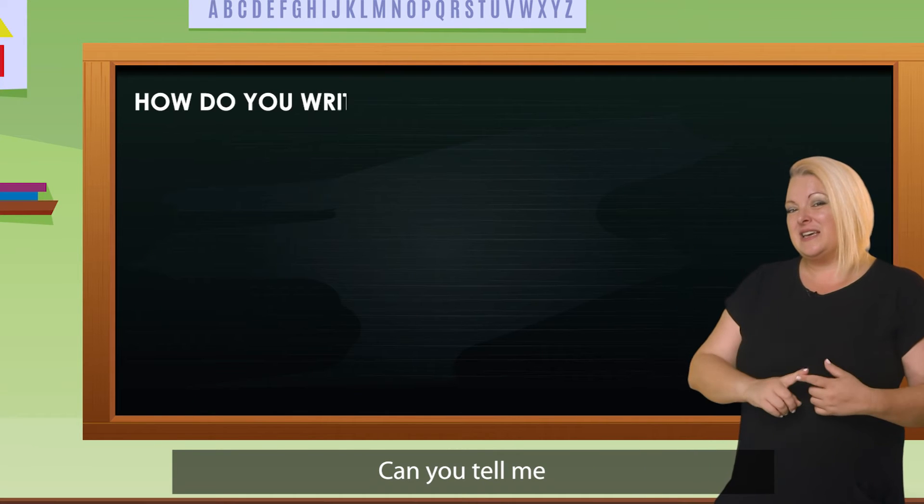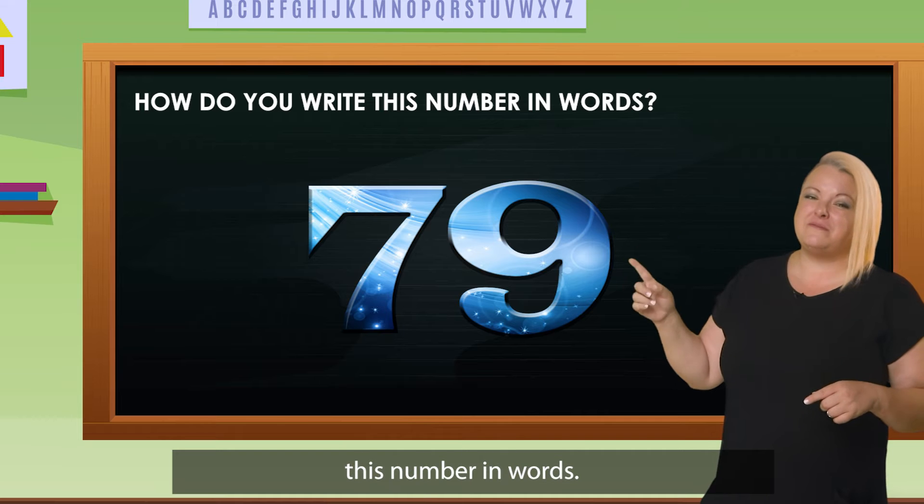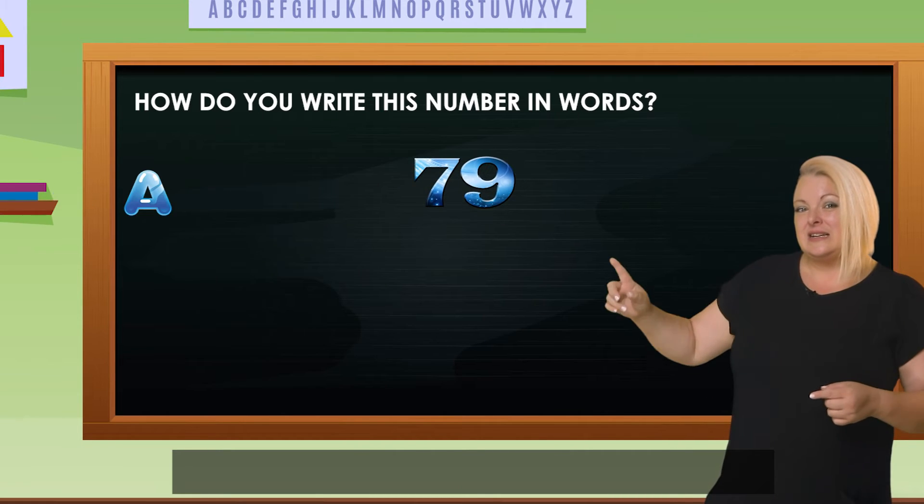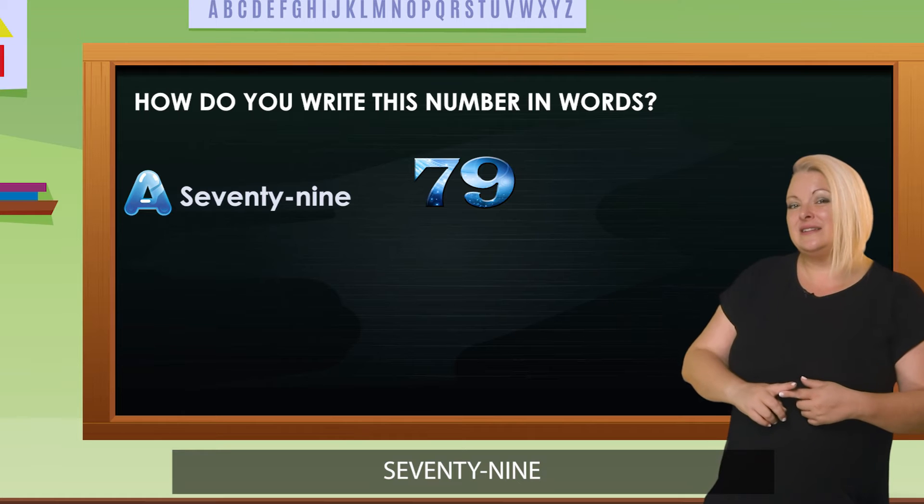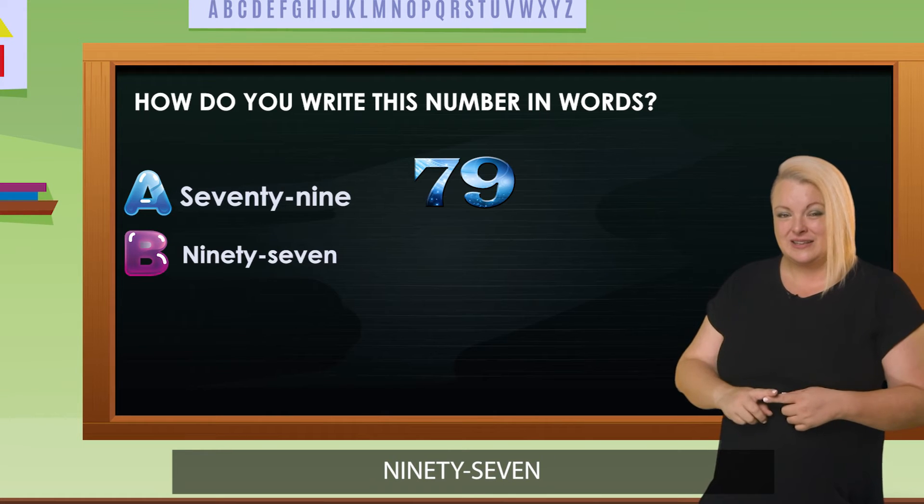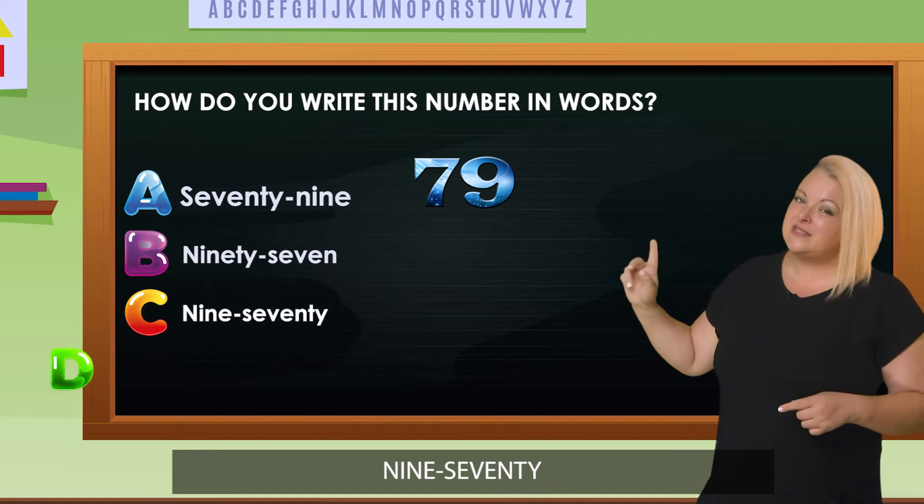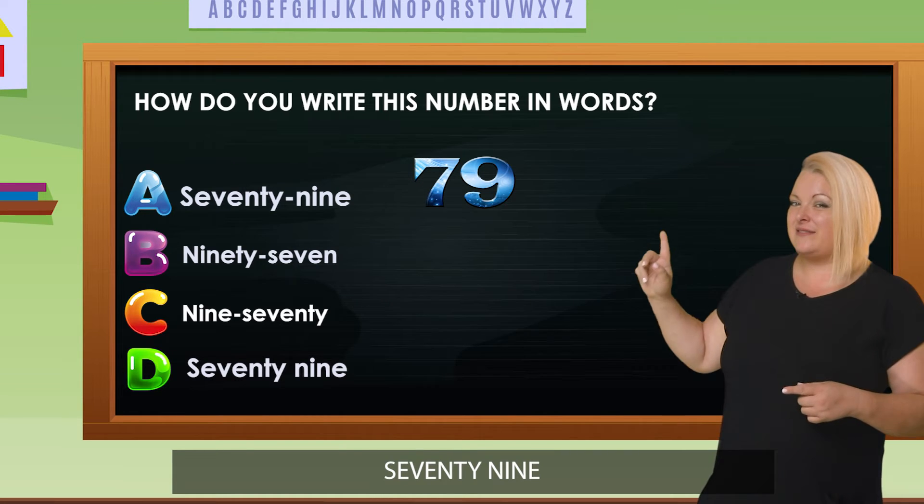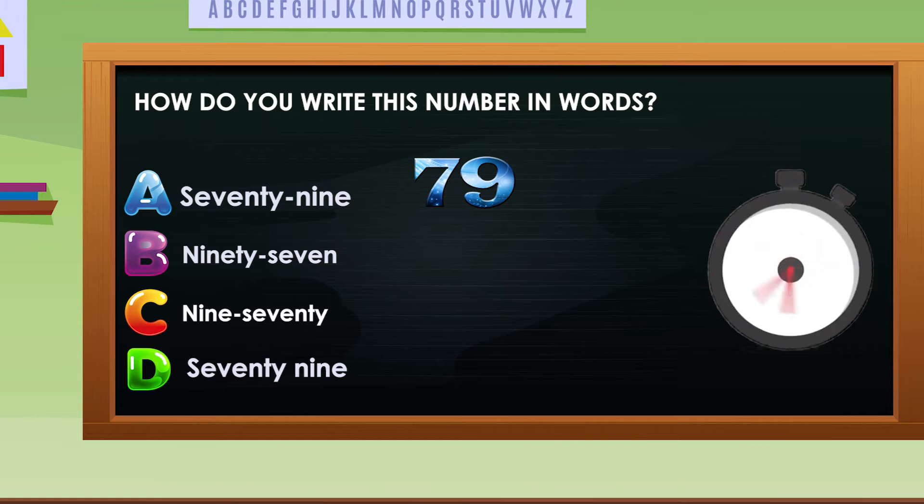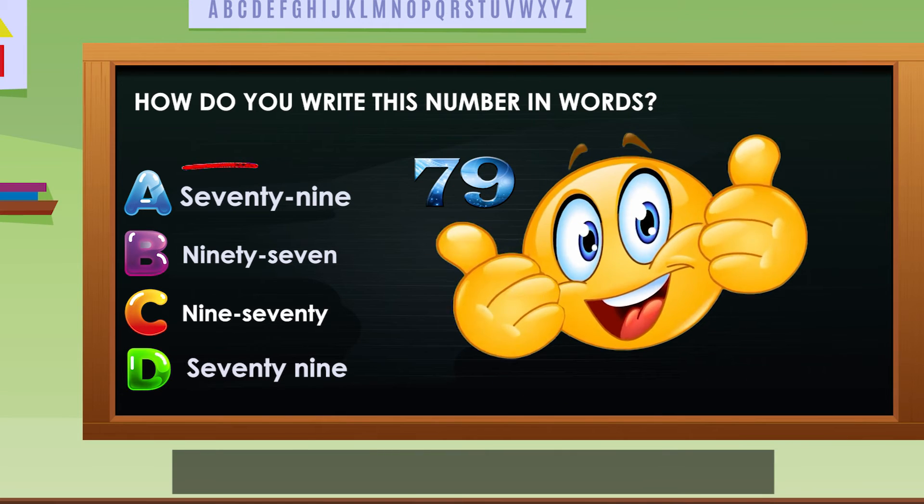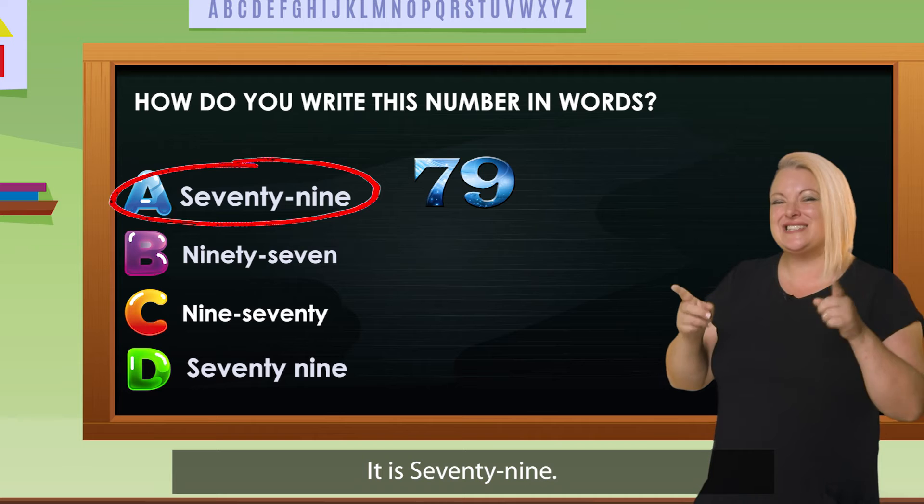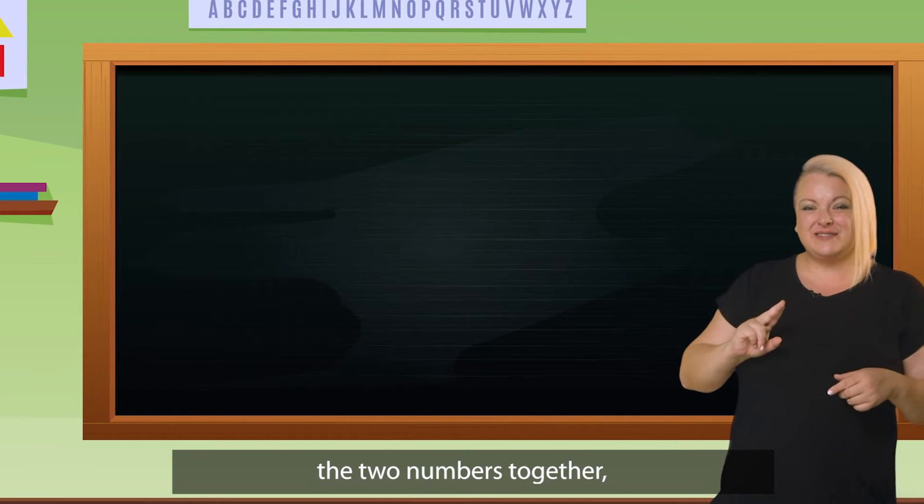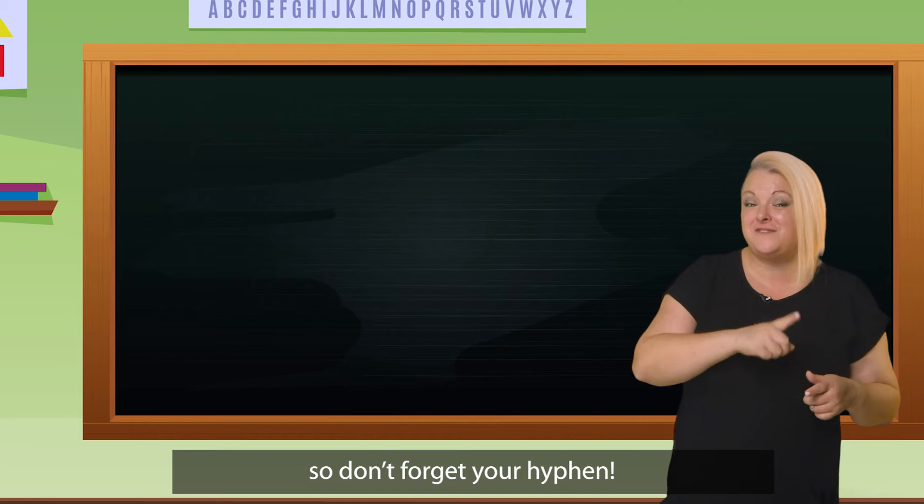Can you tell me how to write this number in words? Is it 79, 97, or 79? That's it. It's 79. The hyphen brings the two numbers together. So, don't forget your hyphen.